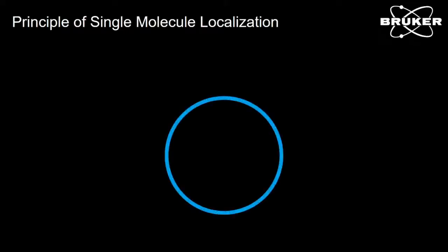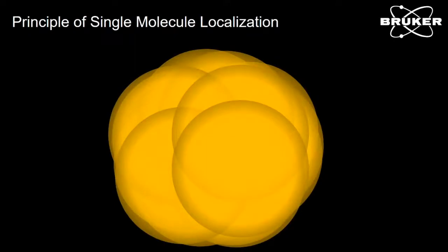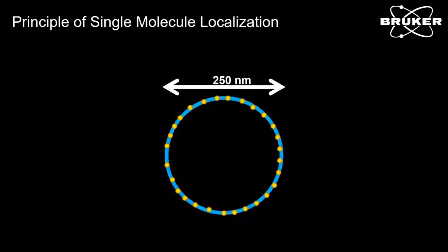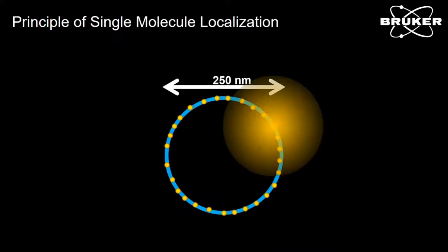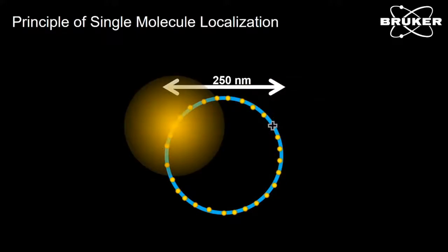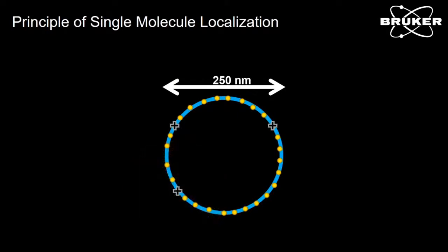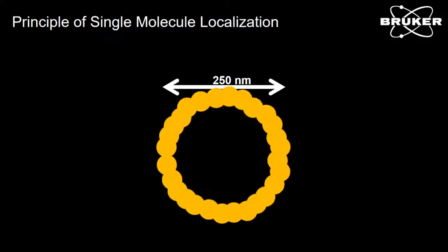So how does that work? If you have an object in a cell that's below the diffraction limit of light — say this tubule, 250 nanometers in diameter — we can label this with fluorophores evenly across its surface. If you look at the ensemble fluorescence, we get this diffraction-limited blur and we can't localize it. However, if we have a way to stochastically activate one or two molecules at a time and isolate these point spread functions, we can use our SRX software to very accurately localize the center point of that point spread function. Then we can activate more molecules, localize them, and repeat until we have all the molecules registered and localized — building an image below the diffraction limit of light.